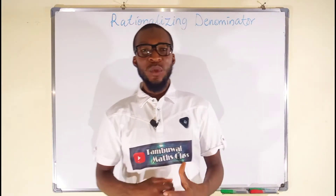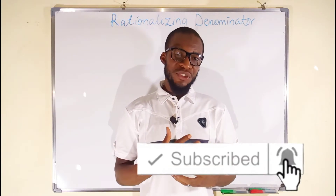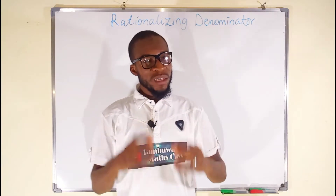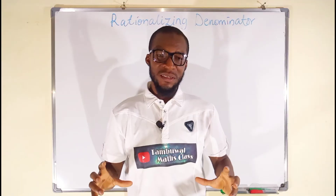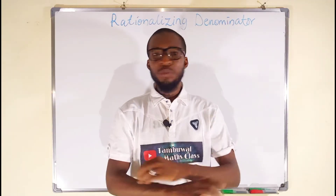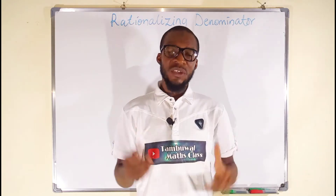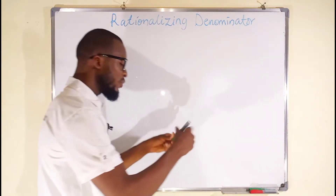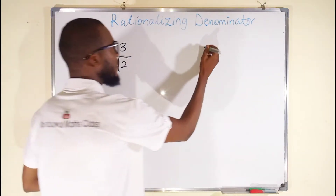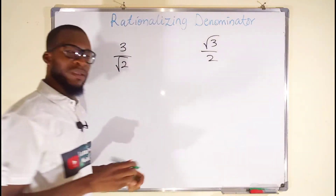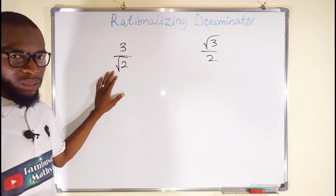Hello, good day viewers. In this tutorial we are going to learn how to rationalize the denominator of a surd expression. Sometimes a surd expression can appear in fractional form, and in mathematics it is not standard to have a denominator in surd form. We have to rationalize it to make it rational, because any surd expression is said to be irrational.